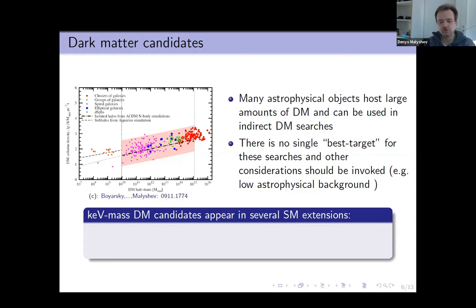As you can see from previous talk, galactic center is a good target, but also the signal from it can be spoiled from poorly known dark matter density there and high astrophysical background in that region. Since before we were speaking about WIMPs, about high mass dark matter, let me briefly introduce you to keV mass dark matter.